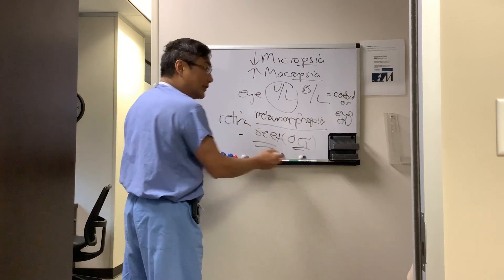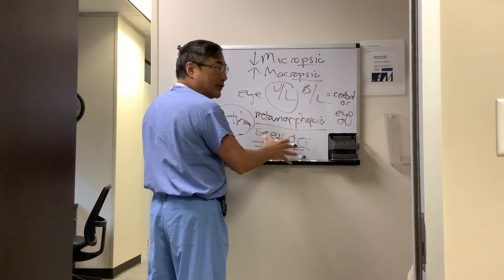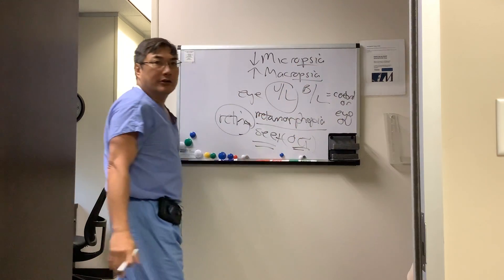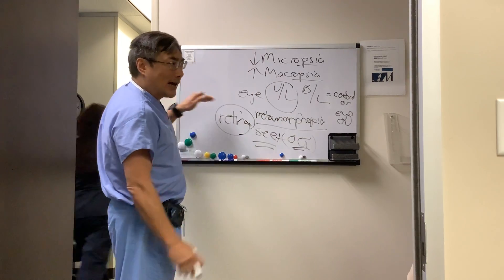And therefore, exam plus OCT should be able to answer the question if it's retina or not. And if there's nothing in the eye, of course you're going to go to the MRI. However, let's just talk about this unilateral micropsia or macropsia.